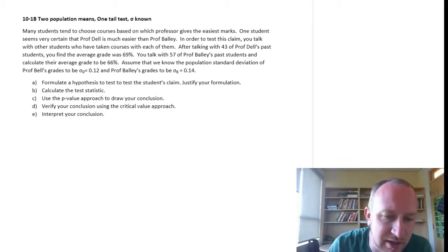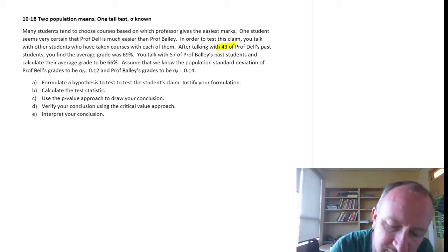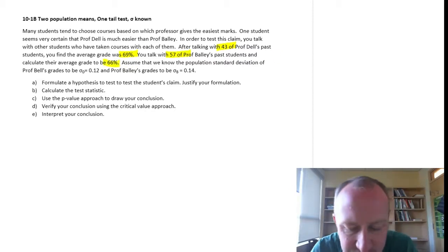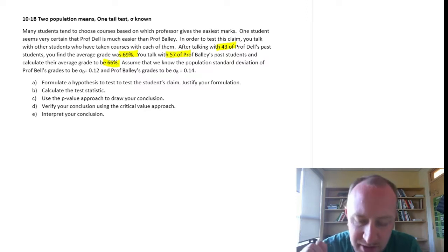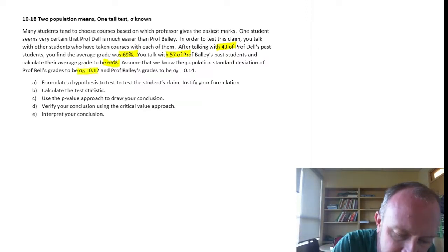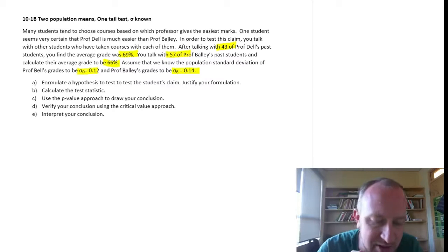In order to test this claim you talk with other students. I'm going to highlight important stuff here. After talking with 43 of Professor Dell's past students you find their average grade was 69%. 57 of Professor Bailey's past students have an average of 66%. And here we'll assume that we know the population standard deviation of Professor Dell 0.12 and Professor Bailey 0.14.